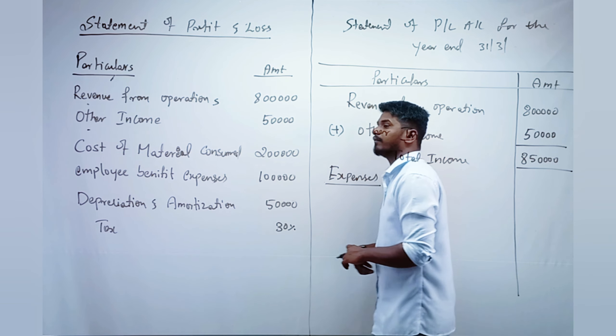Next, we calculate tax at 30 percent on 5 lakh: 5 lakh into 30 percent equals 1.5 lakh. Subtracting that, we get Profit After Tax. Profit Before Tax is 5 lakh, Tax is 1,50,000, so Profit After Tax is 5 lakh minus 1.5 lakh, which is 3.5 lakh.